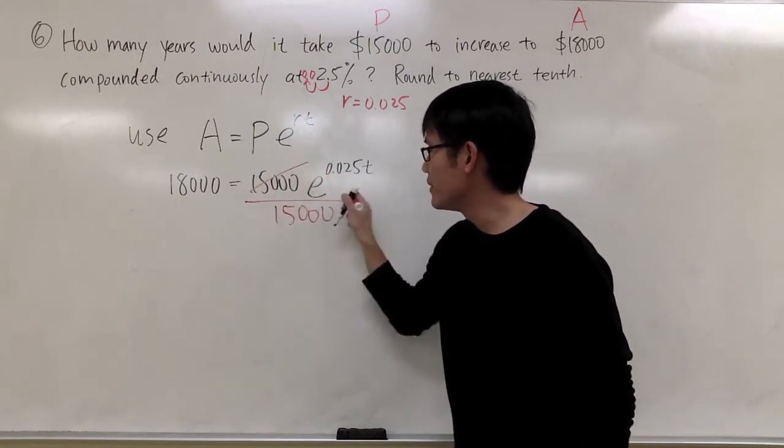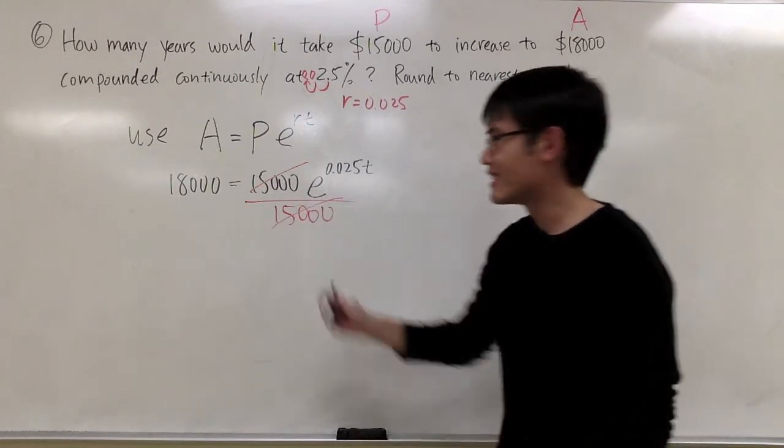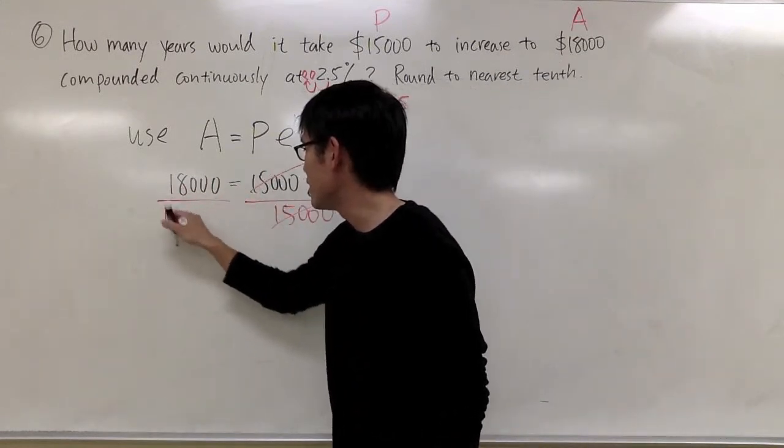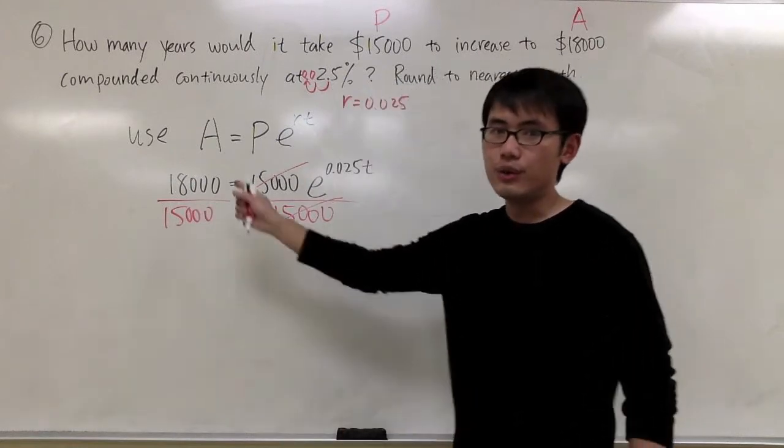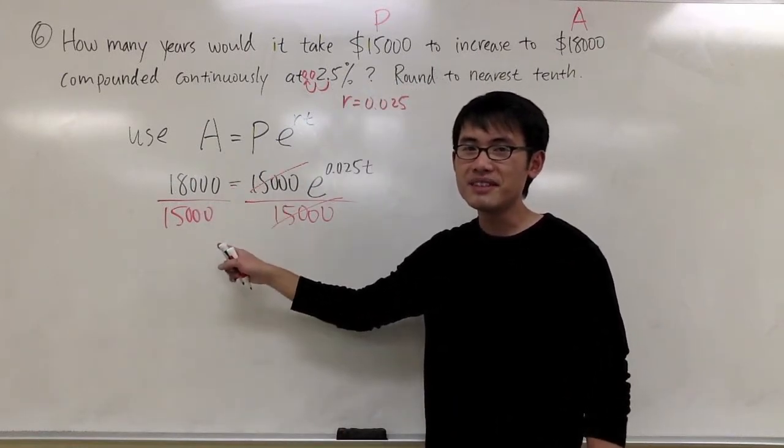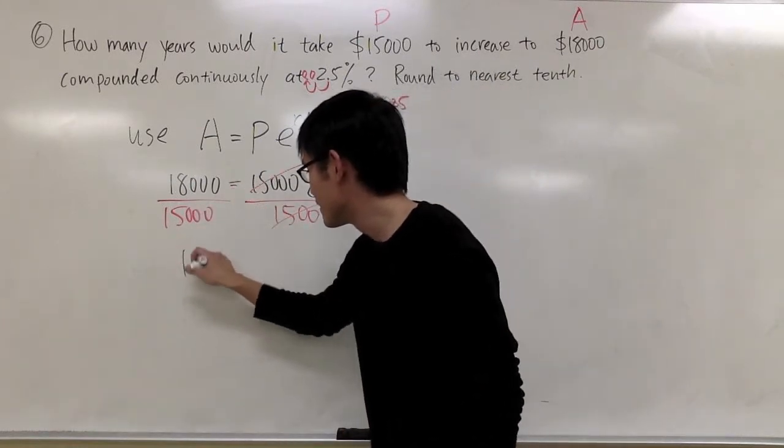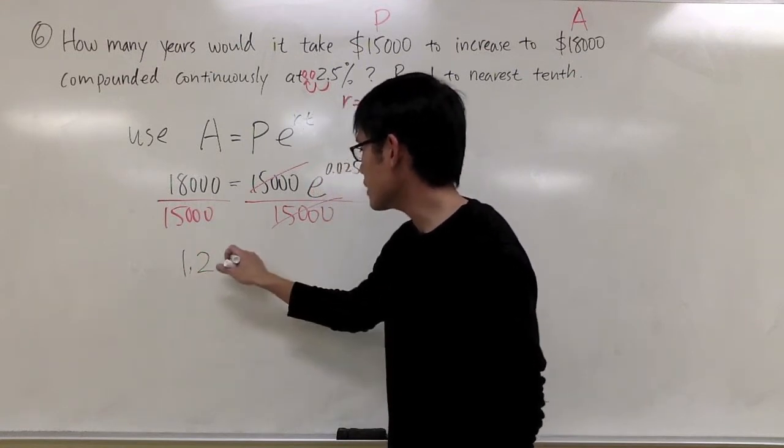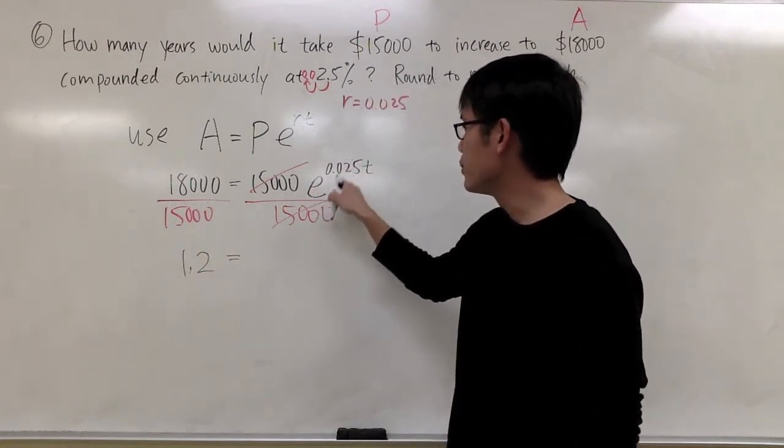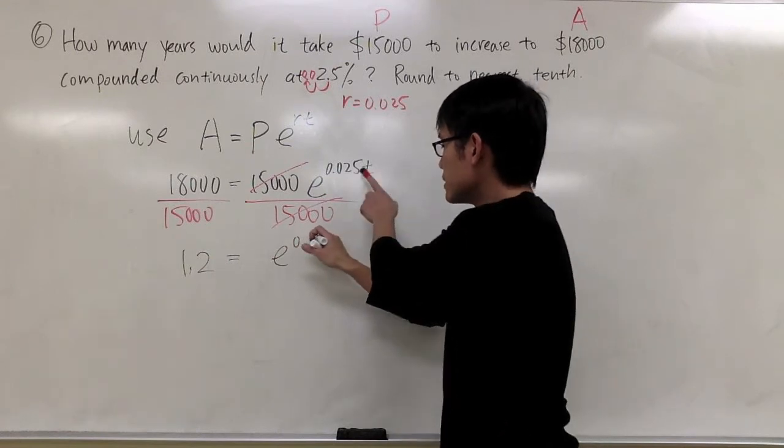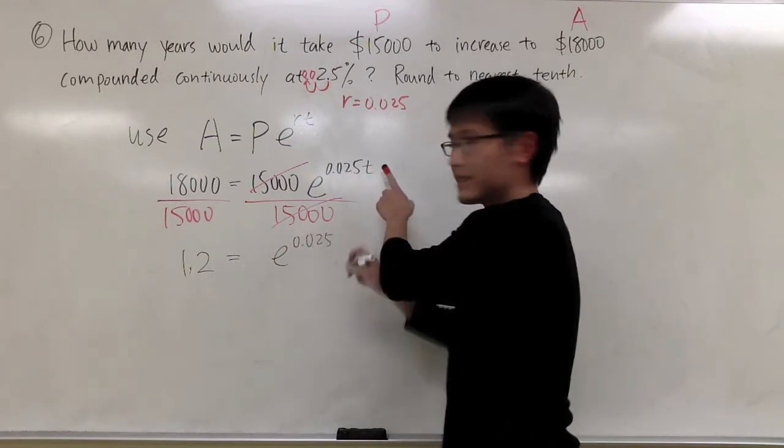This way, the 15,000 will cancel each other out. If you do 18,000 divided by 15,000, you get 1.2, and that equals to e to the 0.025t.